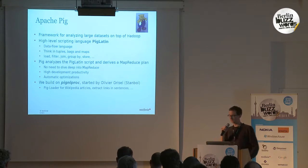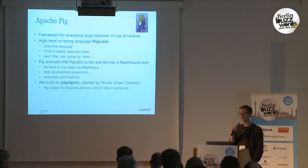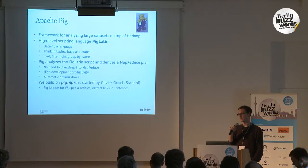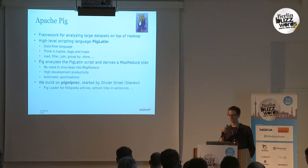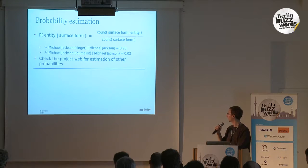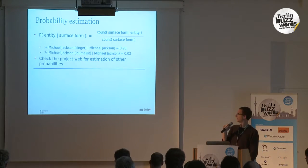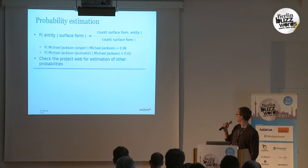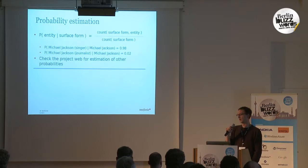Using Pig, there's an open source project by Olivier Grisel from the Istanbul project that we could utilize. He wrote a Pig loader for Wikipedia articles and some code to extract links from sentences. This was very helpful — we could use this project for the estimation of our probabilities. What we want is the distribution of, given a string or surface form, what are the most likely entities. We do that by counting how often the surface form linked to an entity and normalizing by the surface form total count.